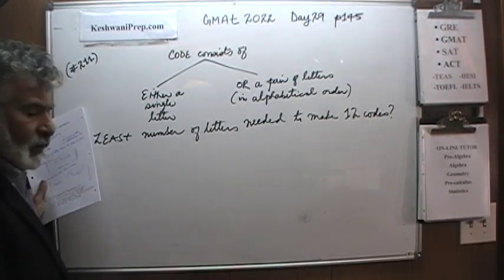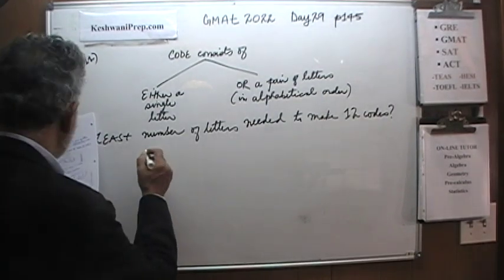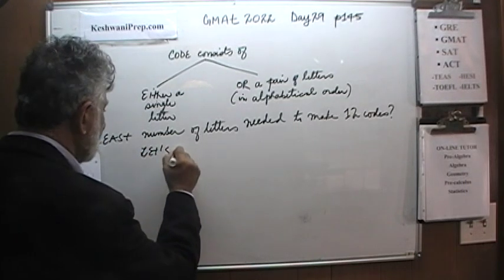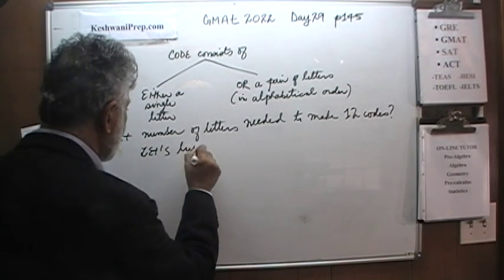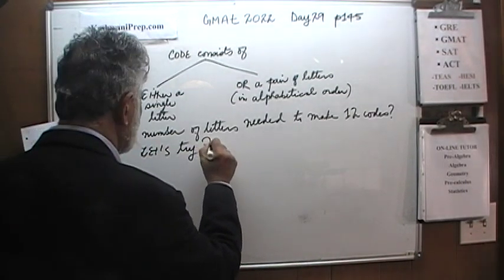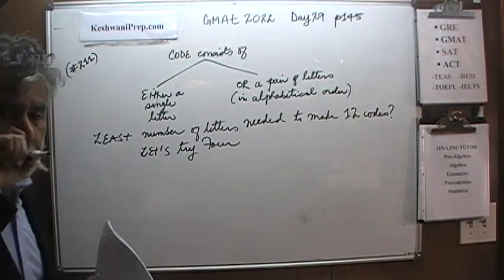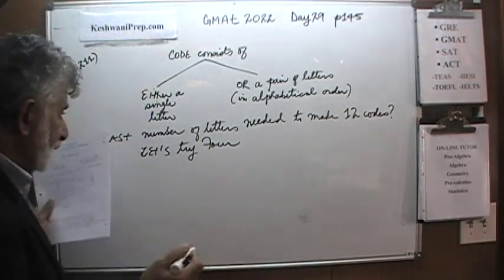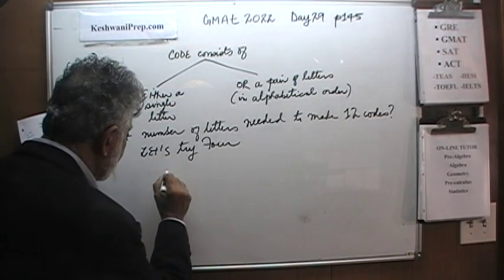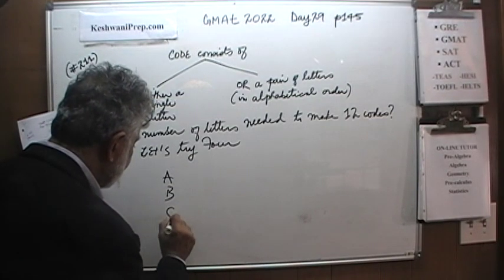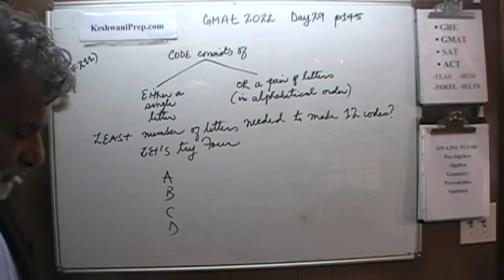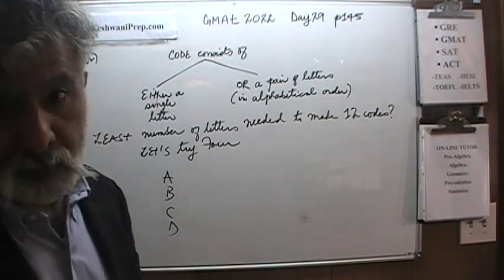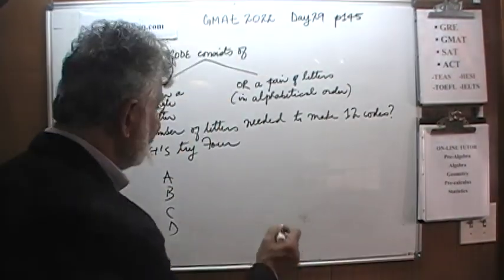Why don't we start with 4? Let's try 4 letters and see if that would do the trick, or if it's not sufficient, we can move on. So if we have 4 letters — A, B, C, D — with 4 letters we can obviously identify 4 people by calling them A, B, C, D. So that's 4 single-letter codes.